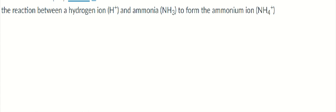Let's draw the Lewis structure for the reaction between a hydrogen ion, also known as a proton. There's no electrons there, so it's H+. And that's going to react with ammonia, which is NH3.